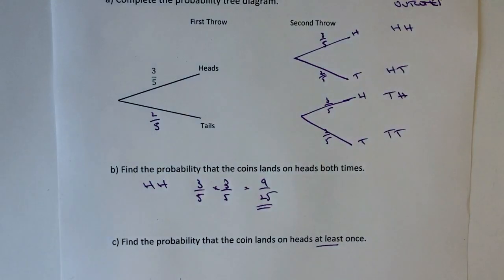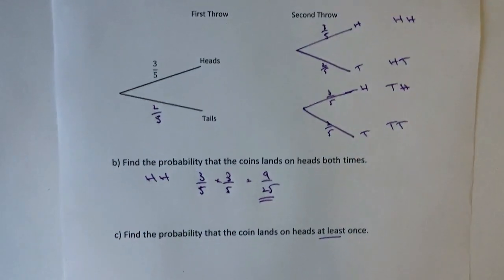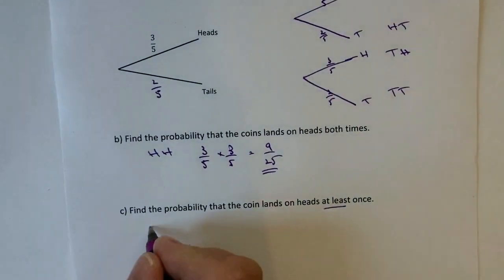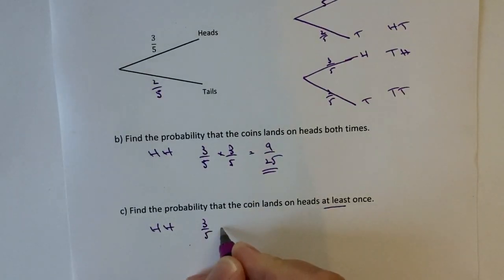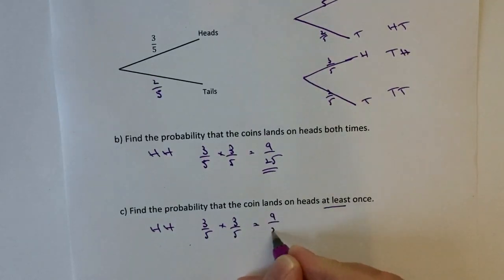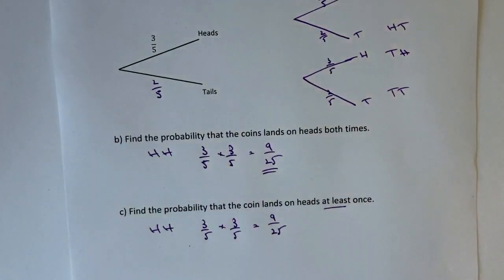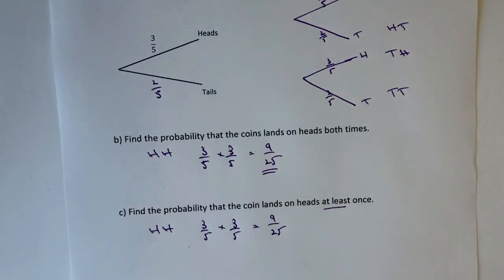So let's look at the probabilities first. Well, we've already got heads heads so we can write that. That's absolutely fine. I'm just going to copy it. Okay, just so that we've got completeness. Now what I suggest you do is at the moment, I'm not going to reduce any of the fractions. I can't with that one anyway, but I'm not going to reduce any of the fractions because at the end of it, we're going to add them up.